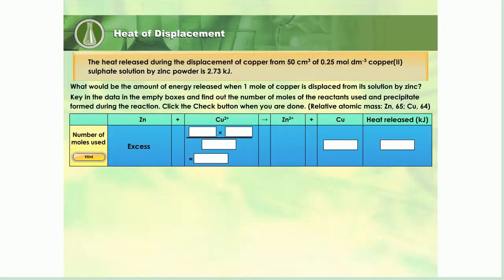What would be the amount of energy released when one mole of copper is displaced from its solution? Let us calculate together. First, calculate the number of moles of reactants used in the reaction to find out the number of moles of copper displaced. Click hint if you need some help.